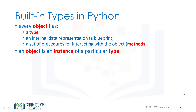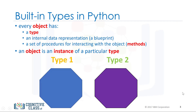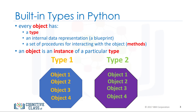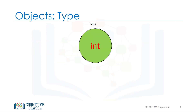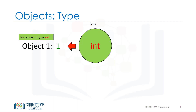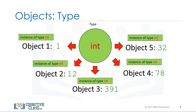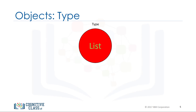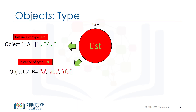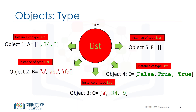For example, we have two types: type 1 and type 2. We can have several objects of type 1 as shown in yellow — each object is an instance of type 1. We also have several objects of type 2 shown in green — each object is an instance of type 2. Every time we create an integer we are creating an instance of type integer, or an integer object. In this case we are creating five integer objects. Similarly, every time we create a list we are creating an instance of type list, or a list object — in this case five list objects.